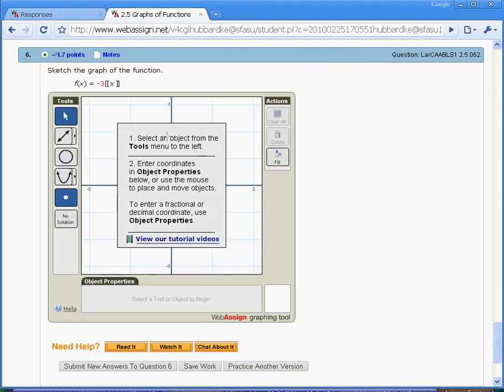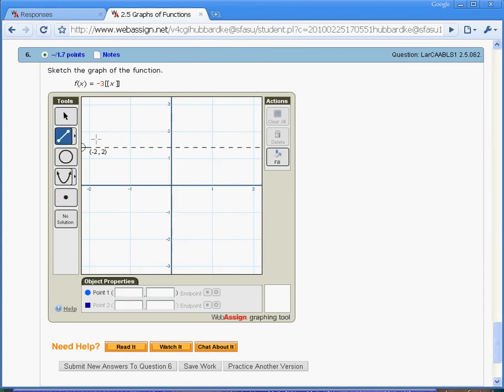how do I input that into WebAssign? I'm going to go over to the line tool. I'm going to pick a segment. My first chunk goes from 0 to 1, but here's the catch. My left endpoint needs to be solid. My right endpoint needs to be an open circle.